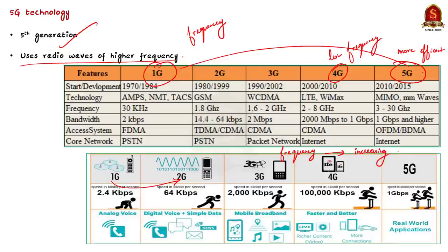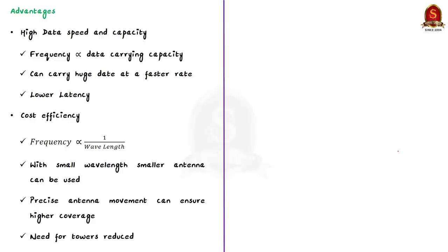With higher frequency, the 5G has the edge of being more efficient. Now let us see the advantages of 5G technology. First advantage is high data speed and data capacity. Due to its higher frequency, the capacity of data that is transmitted is huge and the rate at which the data can be transmitted is also huge. Due to this property, that is 5G's ability to transmit huge data at a faster rate, the 5G has low latency. We have seen many a times what latency is. Latency is how long it takes for data to travel between its source and destination. So lower the latency, better our experience.